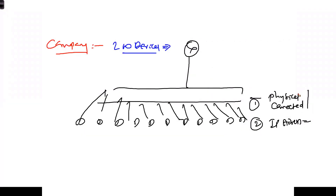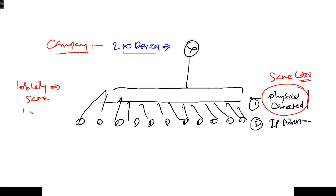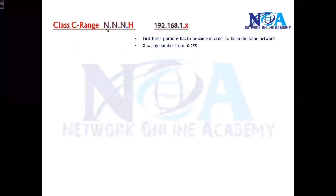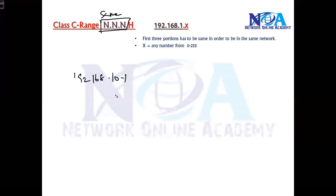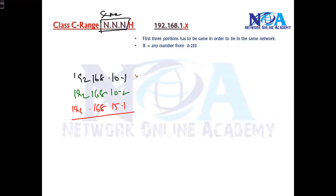The rule is: devices that are physically connected in the same LAN must also be logically in the same network, which means the network portion has to be the same. If using C class, the first three portions must be the same. If I change them, it becomes a different network. For example, 192.168.10.1 and 192.168.10.2 are on the same network, but 192.168.15.1 is a different network because the third portion changed.